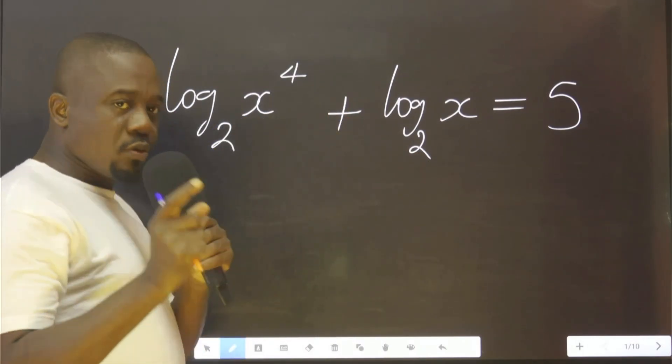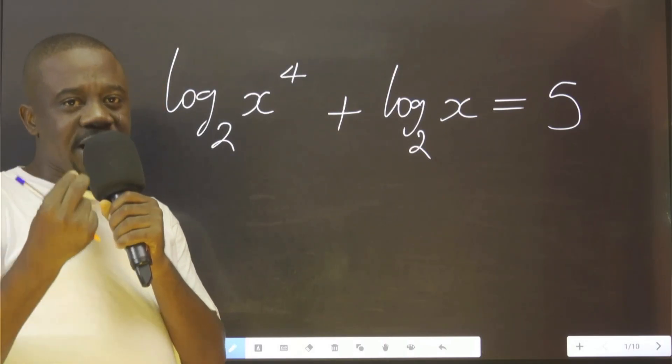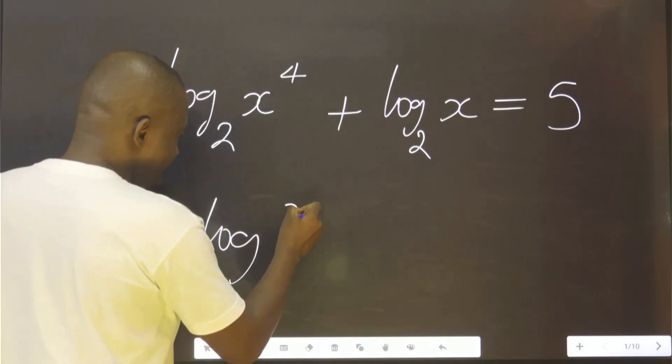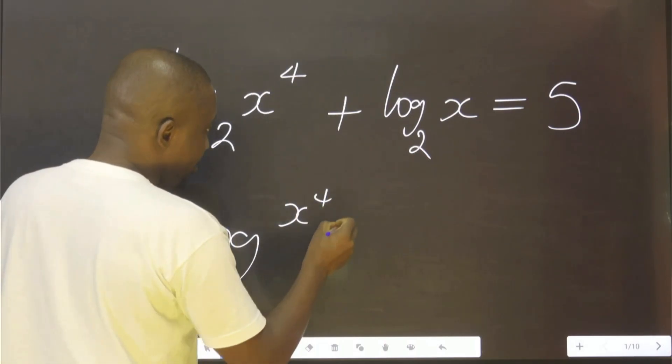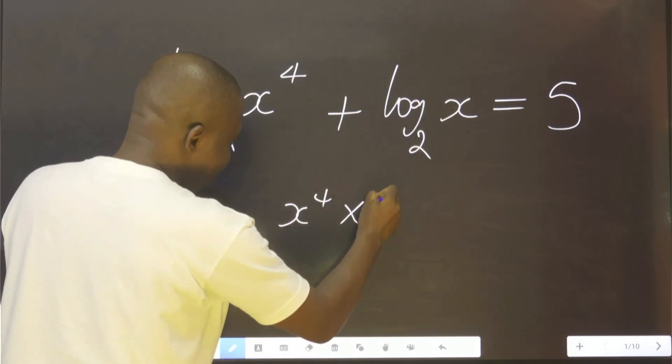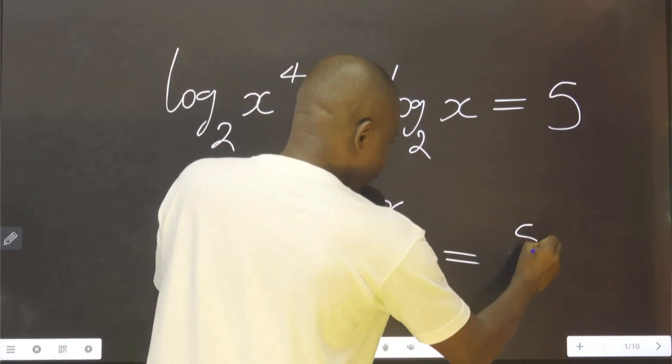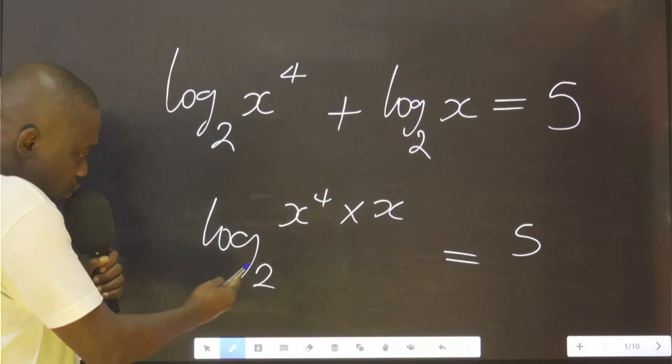Now we use multiplication to bring them together. That is to say log base 2 of x raised to the power 4 multiplied by this x, to the base of 2, is equal to 5. I want this log to the base of 2 to also appear on this side.